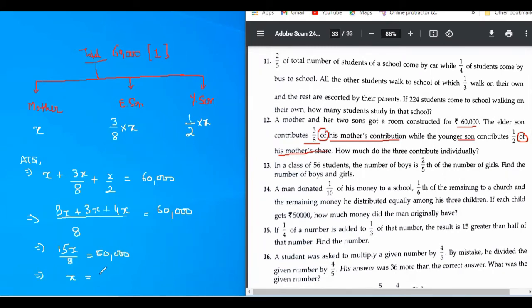So, X equals to 60,000 into 8 upon 15. 15 times this will be 4,000. Answer would be 32,000.